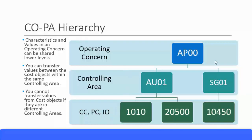Now in the COPA hierarchy, the highest node is the operating concern. If you have the CO module or the controlling module active and if you have the profitability analysis active, then the highest node or the highest object is called the operating concern. You are familiar with the controlling area, and we can assign one or more controlling areas to one operating concern.